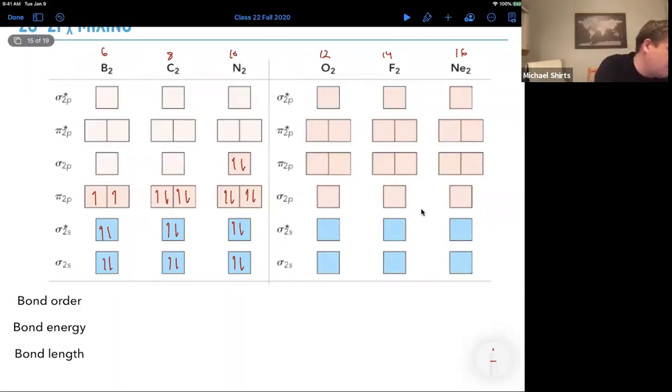So, we have four in bonding orbitals, two in antibonding over two, equals one. Bonding order one, the bond energy ends up being 290 kcal per mole. The bond length about 159. There's no way to calculate that. I'm just looking up off the tables.